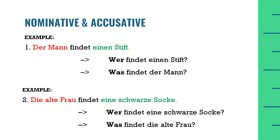The next example is: 'Die alte Frau findet eine schwarze Socke' — 'The old lady finds a black sock.' In this sentence there are again three parts: 'die alte Frau,' the verb 'finden' conjugated as 'findet,' and 'eine schwarze Socke.' To identify the nominative and accusative cases: the old lady is performing the action, so 'die alte Frau' is the subject — the nominative case.